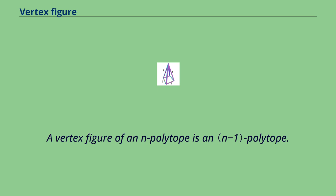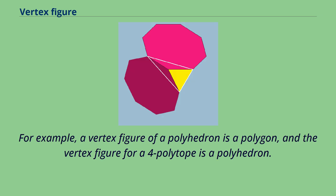A vertex figure of an n-polytope is an (n-1)-polytope. For example, a vertex figure of a polyhedron is a polygon, and the vertex figure for a 4-polytope is a polyhedron.